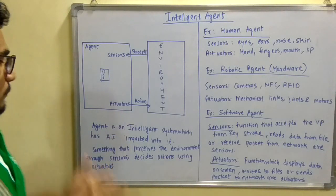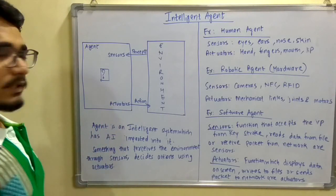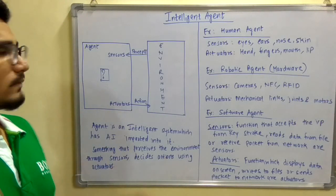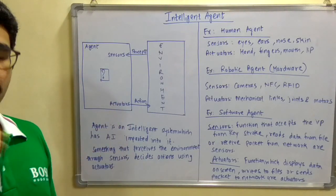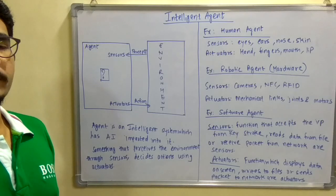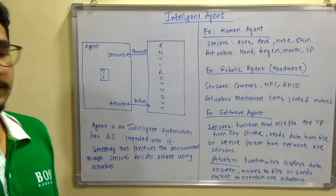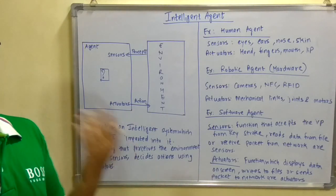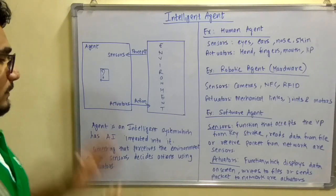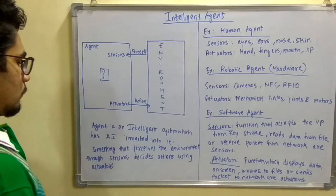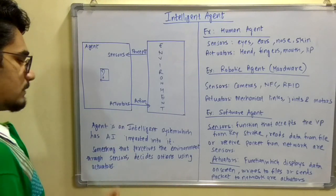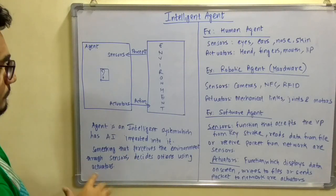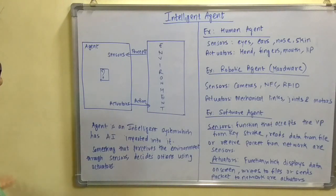An agent is an intelligent system which has artificial intelligence imparted to it. When you create any model and incorporate artificial intelligence into it, it is called an intelligent agent. It is called intelligent because it behaves in a manner like we human beings behave. We have sensors — eyes, ears, nose, skin — and similarly the intelligent agent also has sensors. It perceives from the environment through sensors and decides whether or not to react through its actuators.